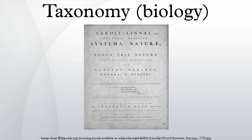The next major taxonomist of the era came in the form of Pliny the Elder. His elaborate 160-volume work Naturalis Historia described many plants, and even gave many of them Latin binomial names.